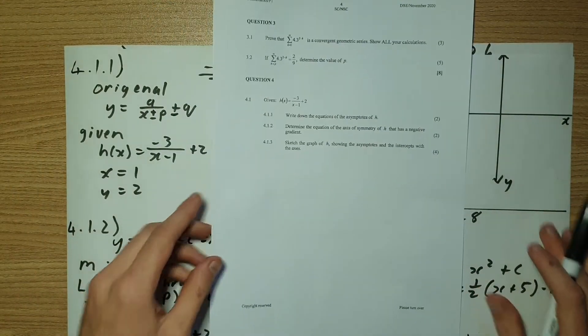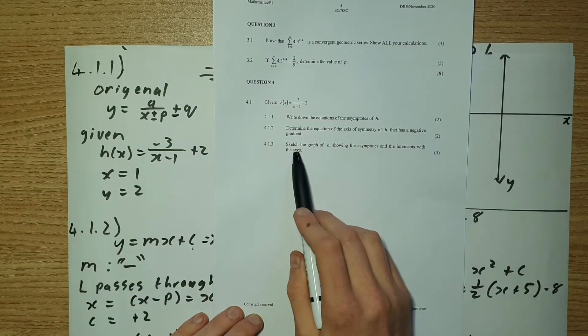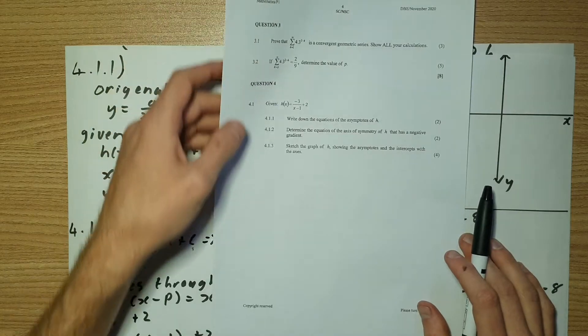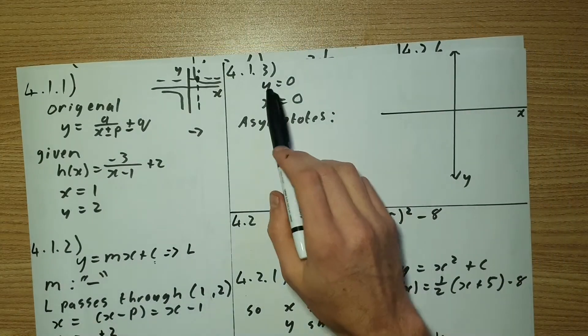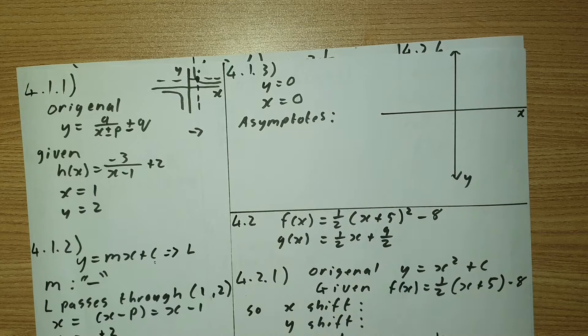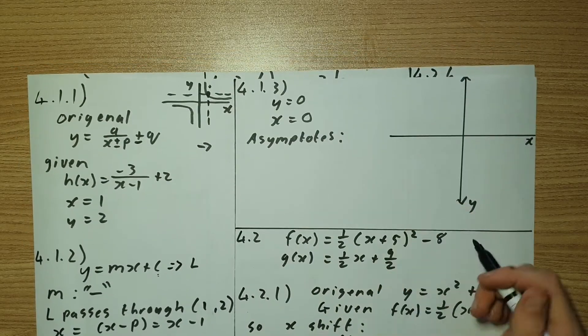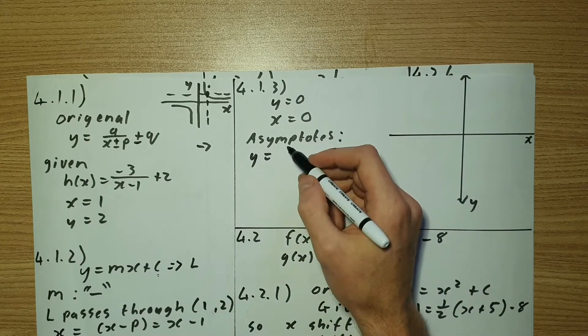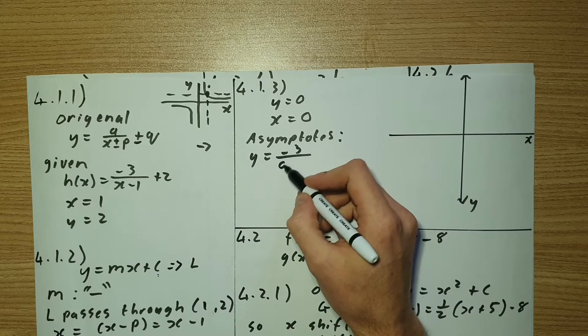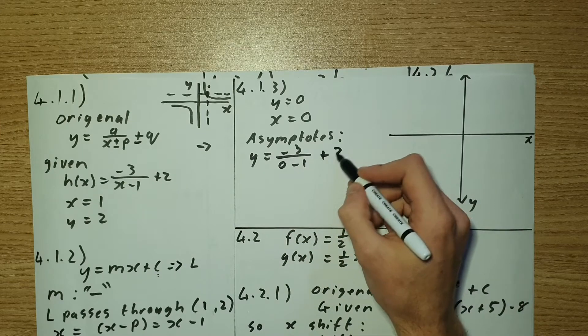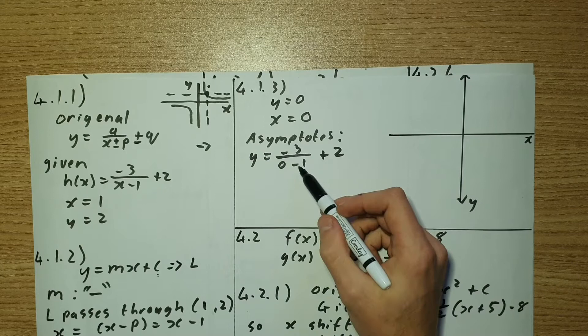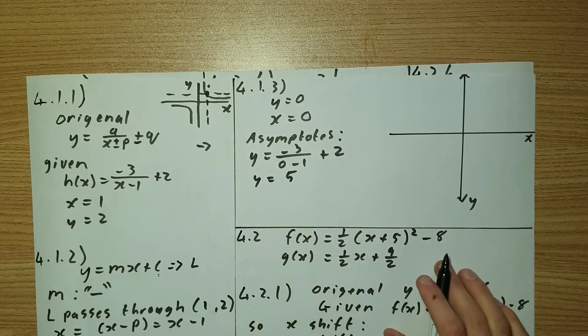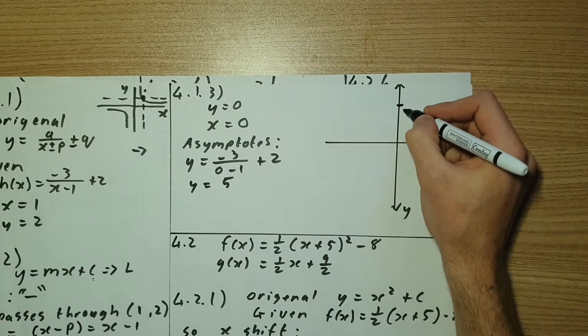The next question is question 4.1.3, which says sketch the graph of h showing the asymptotes and interception with the axis. So the minute we have to show interception, we have to find where y equals to 0 and where x equals to 0. So let's do x equal to 0 first since it's the simplest one. So we'll have y equal to negative 3 over 0 minus 1 plus 2. And if you work that out, negative negative that's positive. So y is going to equal to 5. So that's, let's say 5 is there.